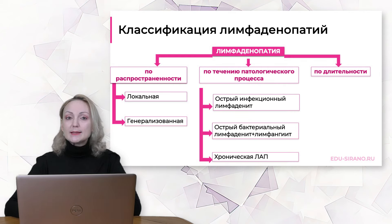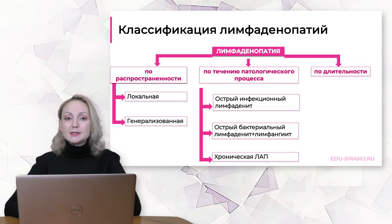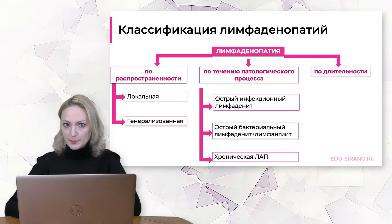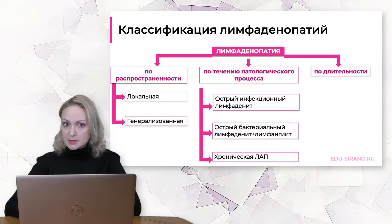По течению патологического процесса выделяют лимфаденит – острое инфицирование лимфатического узла, в том числе бактериальный лимфаденит, который нередко требует хирургического лечения, и лимфаденопатию. Если лимфатический узел увеличен, например, в течение двух месяцев и не имеет признаков острого воспаления, то правильно называть это состояние лимфаденопатией.